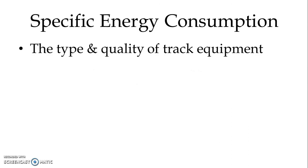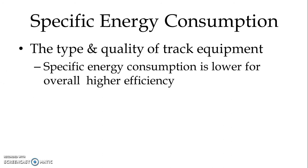The last factor is the type and quality of track equipment. Specific energy consumption is lower for overall higher efficiency. We know from the definition of specific energy consumption that if the overall efficiency of all the electrical systems as well as the transmission system is higher, then the requirement of energy consumption will be less. To achieve very high efficiency, the quality of all track equipment and its maintenance should be at par.